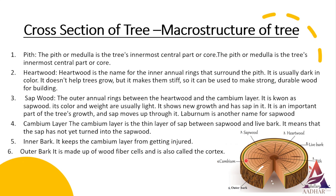Number five: inner bark. It gives protection to the cambium layer from any injury. Number six: outer bark. It consists of cells of wood fiber and is also known as the cortex. Number seven: medullary rays. The thin radial fibers extending from the pith to the cambium layer are known as medullary rays. The function of these rays is to hold together the annual rings of heartwood and sapwood.